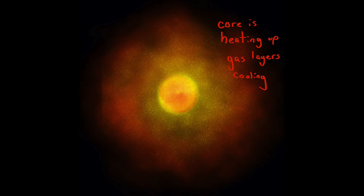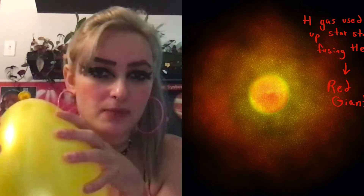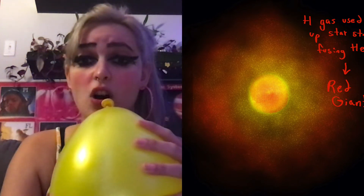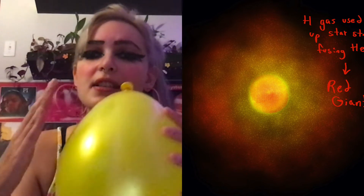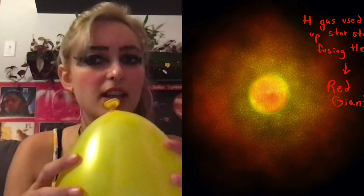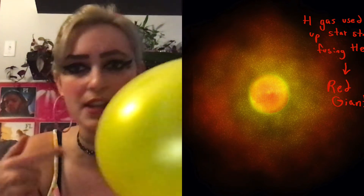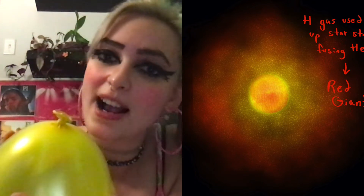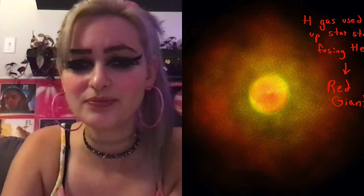Inside a main sequence star we have nuclear fusion: hydrogen fusing into helium. When we move into the red giant phase, the core shrinks and heats up even more, while the outer gas layers — a lot of helium gas — expand. Normally the core doesn't get hot enough for helium to fuse, but as the core heats up and the outer layers expand and cool, helium fusion begins inside the core, giving these giant stars a new energy source.